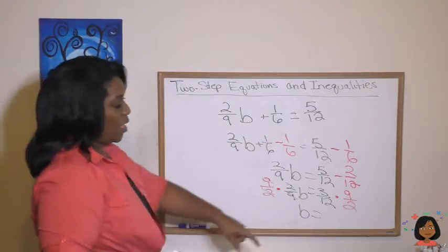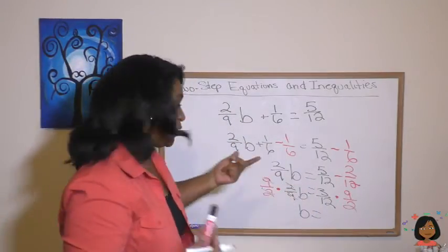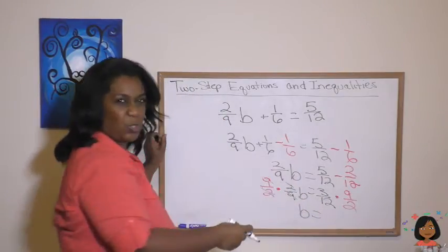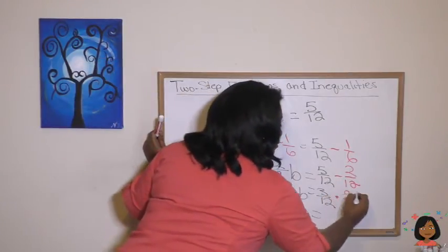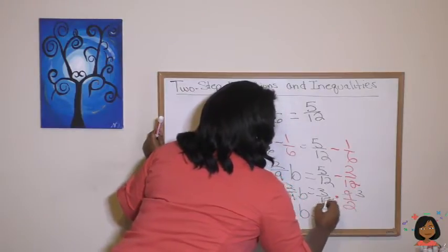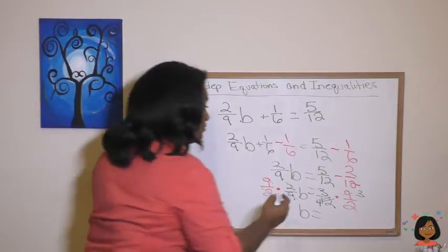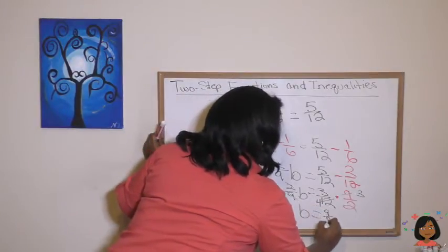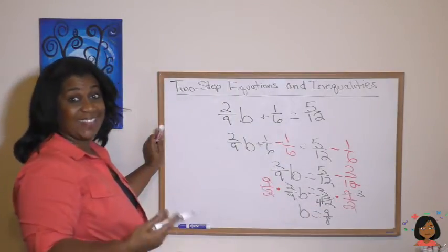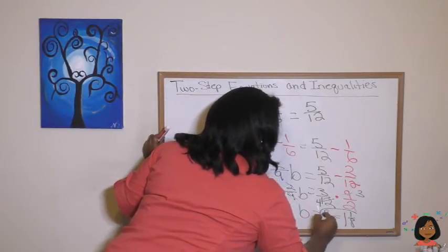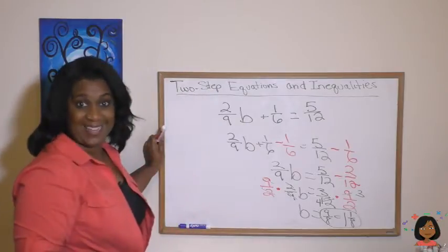And over here, well, our 9 and our 12, we can see we can do something there, right? Actually, we could do our 3 and our 12. I feel like doing the 9 and the 12. So we'll cross out the 9, put a 3, cross out the 12, put a 4. 3 times 3 is 9. 4 times 2 is 8. 9, 8 simplifies to 1 and 1 eighth. And that is your answer.